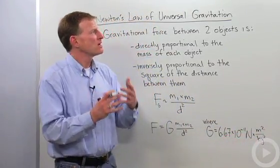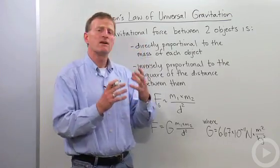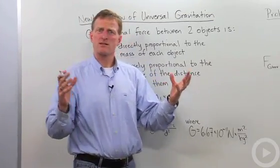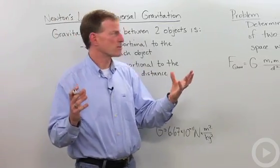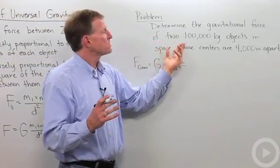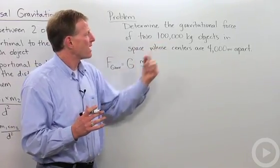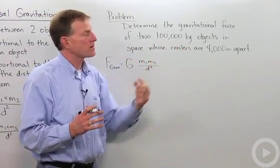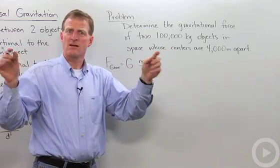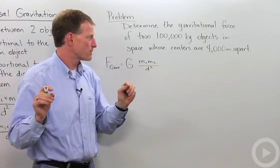So how do we use Newton's universal gravitation law to solve a problem? Let's take two objects in space that are a certain distance from each other. And let's determine the gravitational force between 200,000 kg objects in space that are each 4,000 meters from each other, from the center to center, 4,000 meters apart.